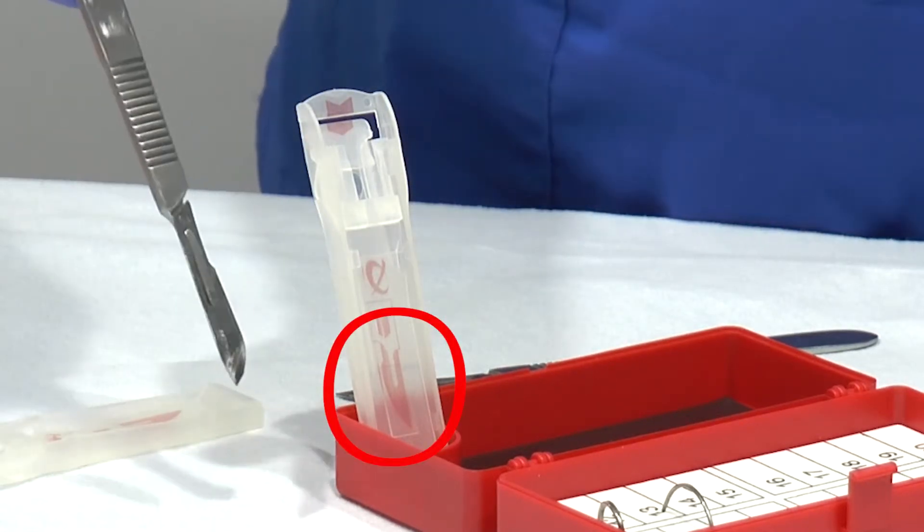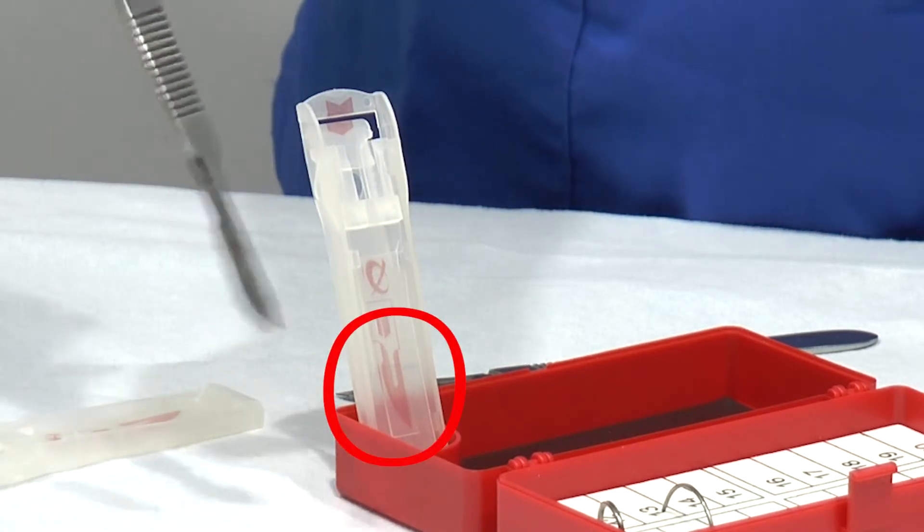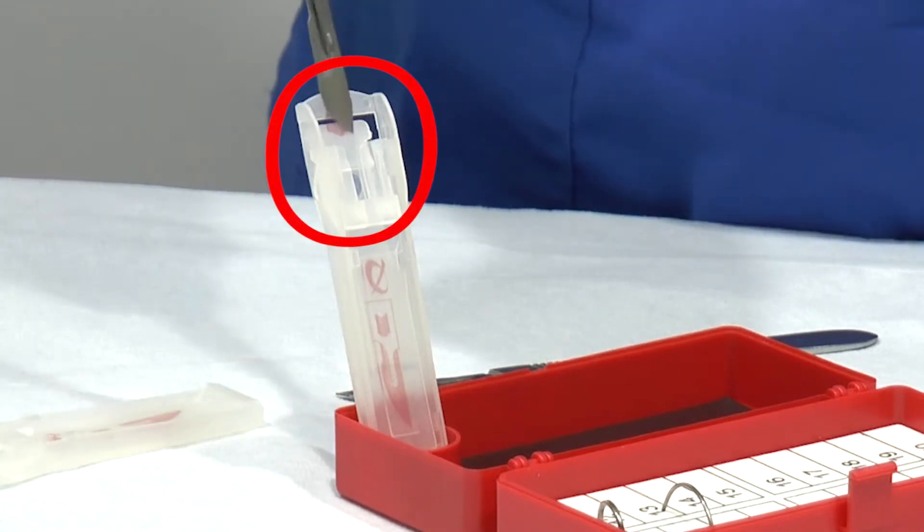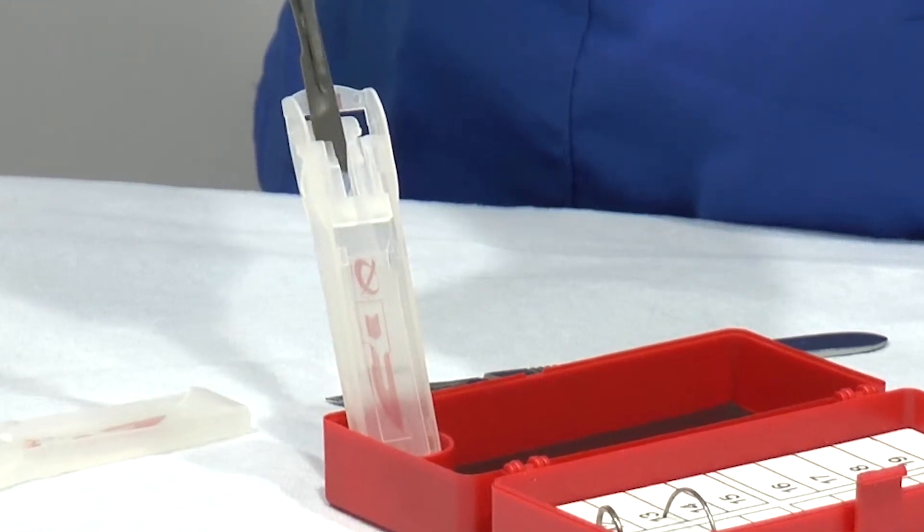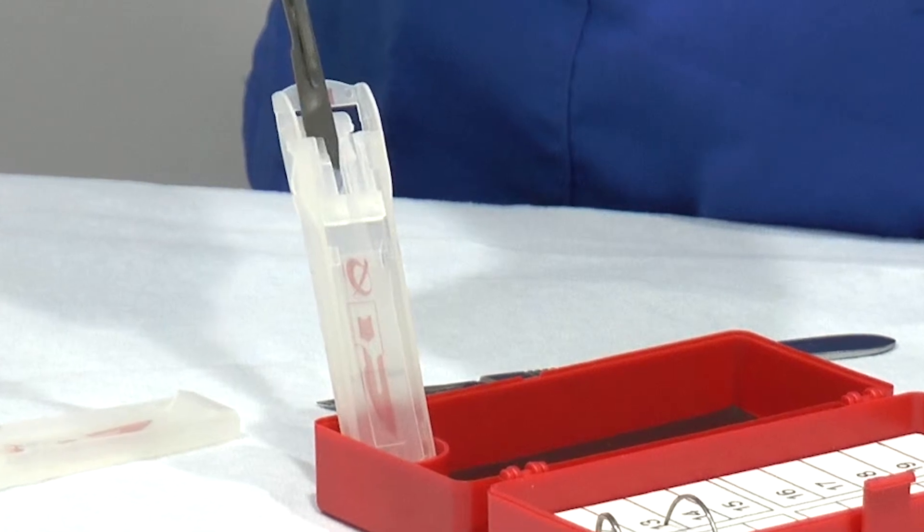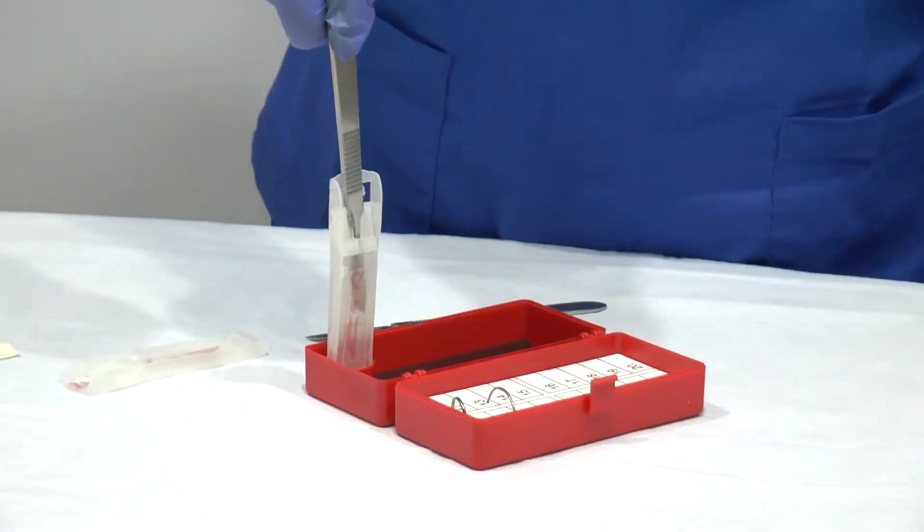Using one hand, press the scalpel blade on the red landing pad and insert it under the jaws of the cartridge. This will help guide the scalpel into the correct placement. Tilt up to 90 degrees and then push the scalpel down until you hear a click.